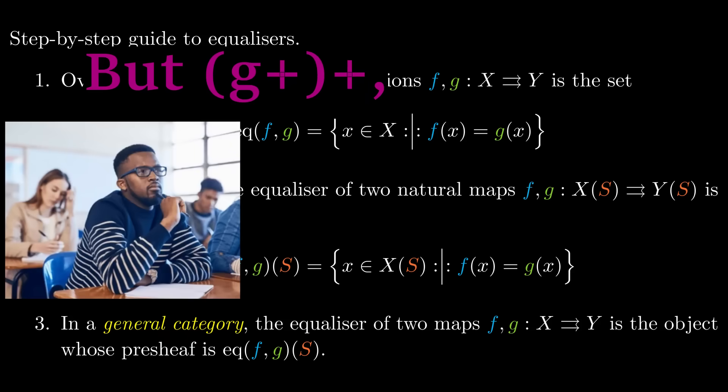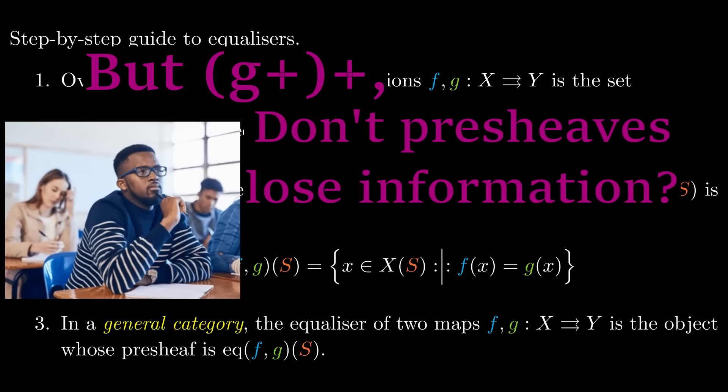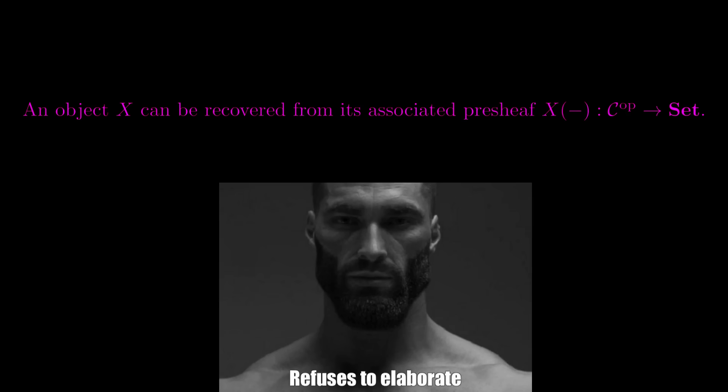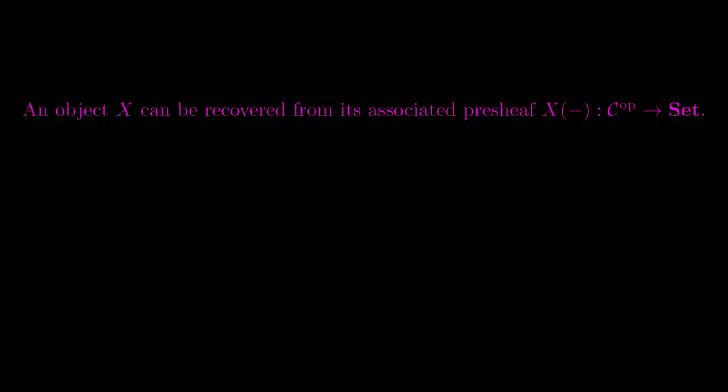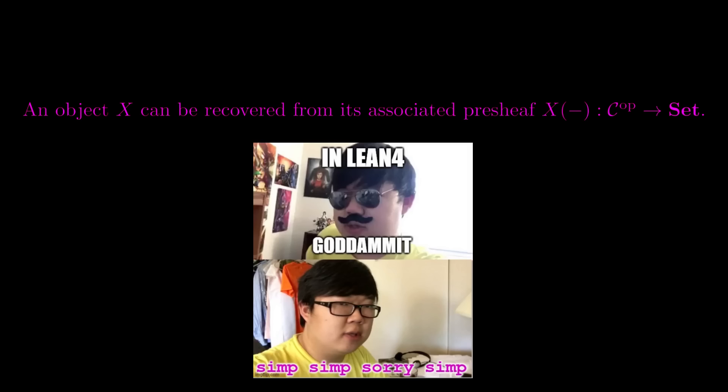But gee! I hear you wondering. How are you sure we are not losing information by passing to pre-sheaves? Good question. This construction implicitly assumes that an object x can be recovered from its associated pre-sheave, which is not clear a priori. If we wanted any hopes of proving this statement, we need the statement to be phrased more precisely. What we expect to hold is that if x and y are equal as pre-sheaves, then they should also be equal as objects of the underlying category.